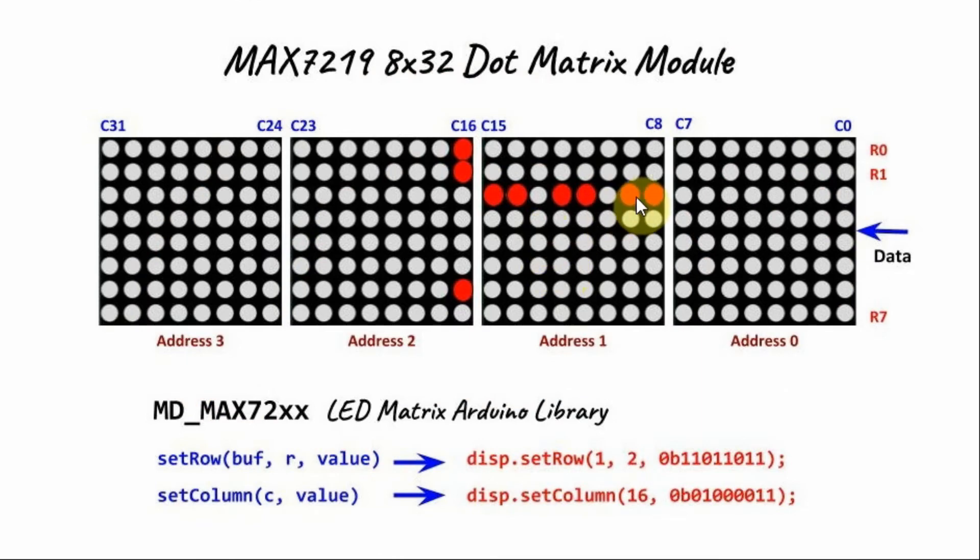As an example, let's say we want to sketch this row pattern here. So this is located at address 1. So we say setRow, buffer 1 or address 1. And it's located at row 2. And the pattern we want to put, binary pattern is 11011011, which is this value here. So executing this statement will give us this pattern on the module.